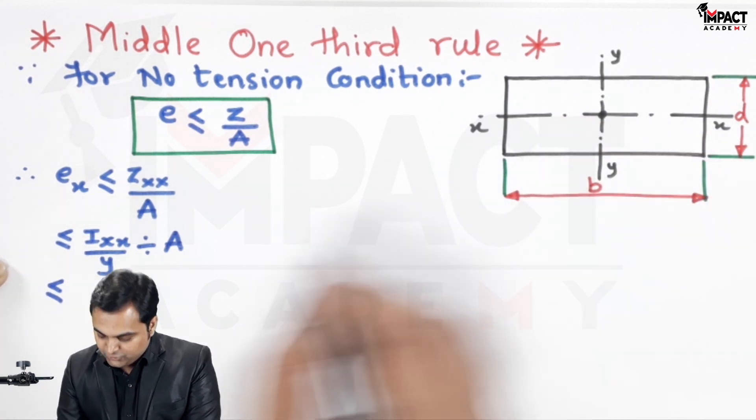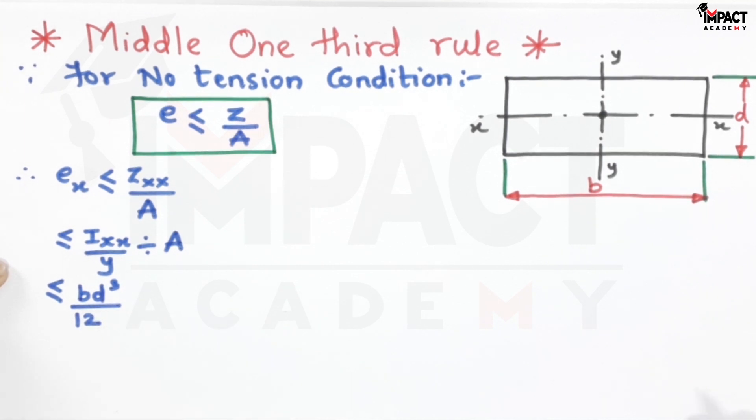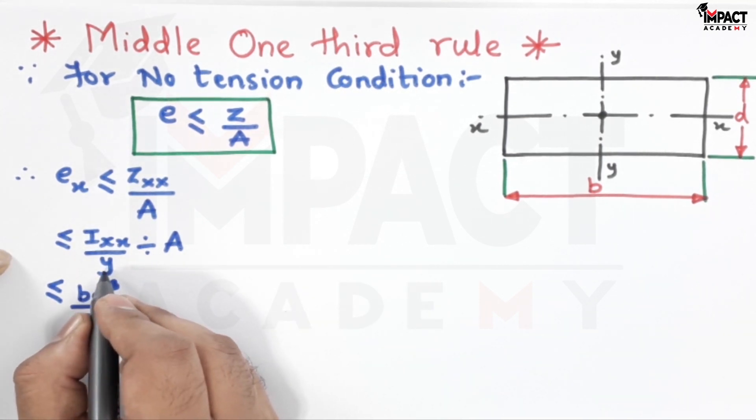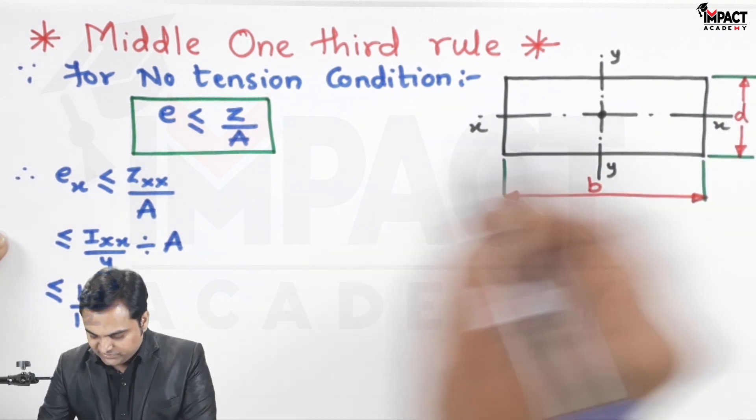I_xx for a rectangular section is bd³/12, then here it is divided by y.